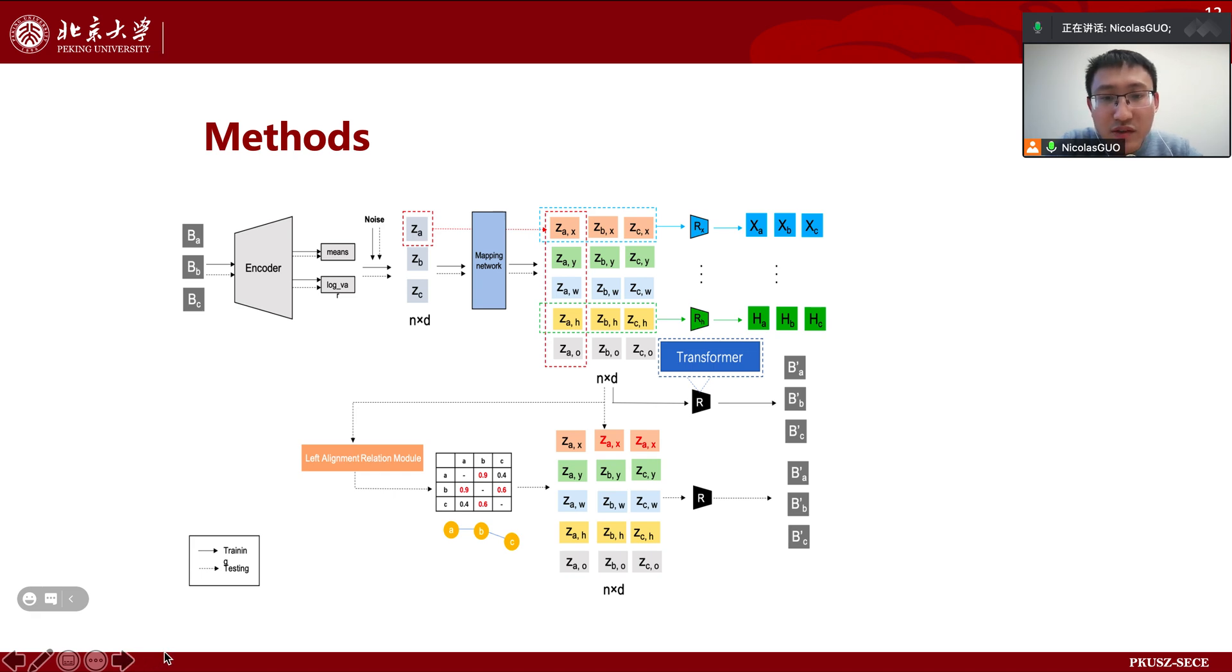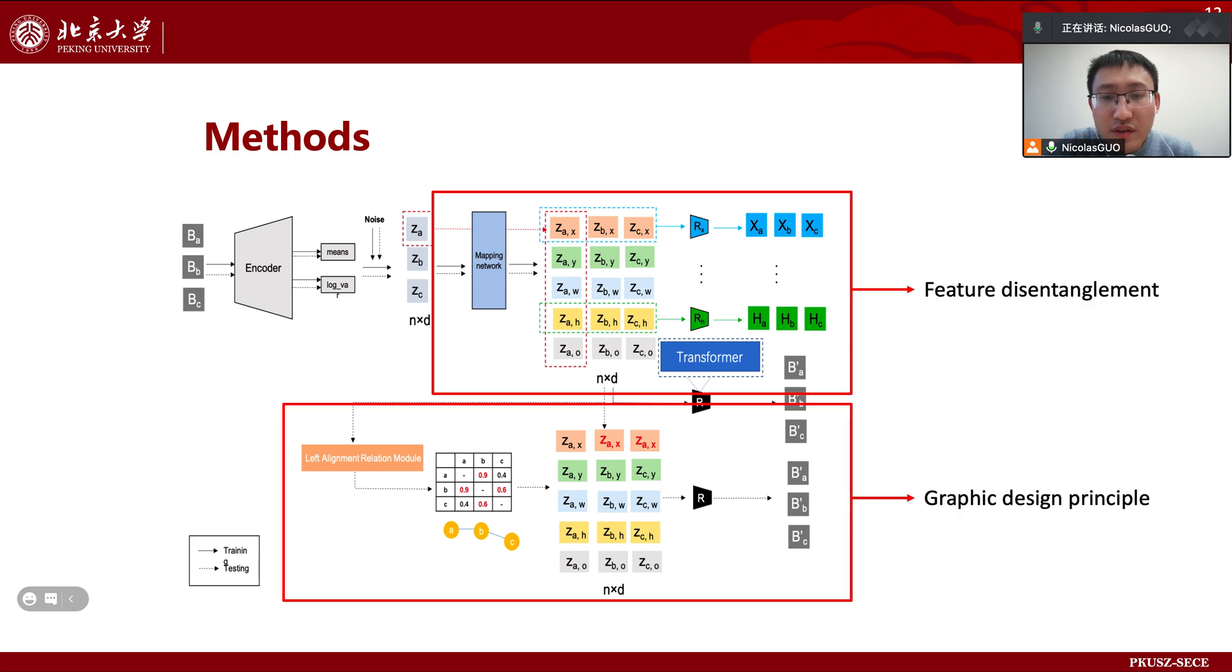The second strategy we use is called feature disentanglement. Specifically, we further disentangle the corresponding latent vector for each component into coordinates x, y, and their width and height, w and h, and other information. Such disentanglement greatly increases the interpretability and controllability of this model.